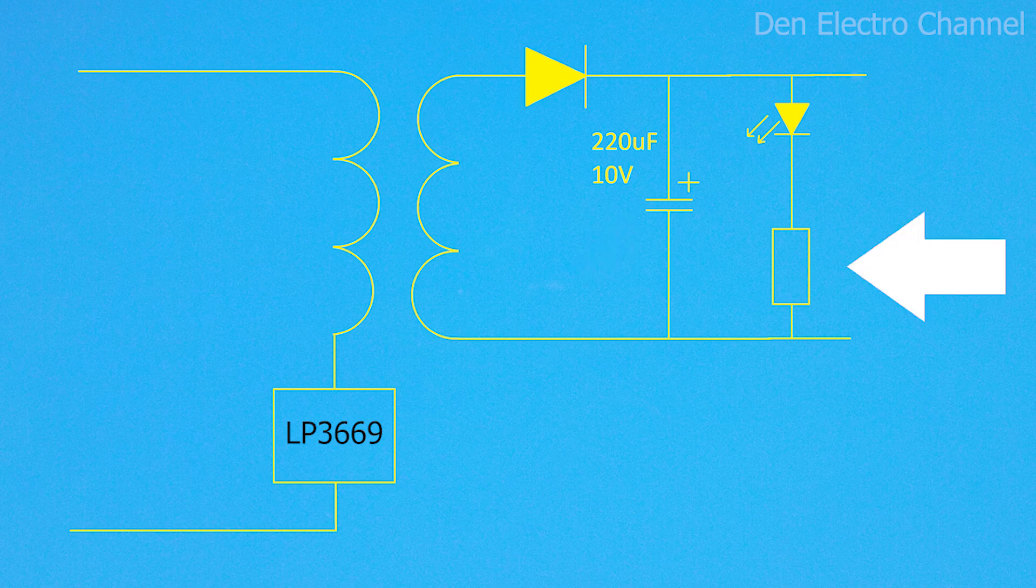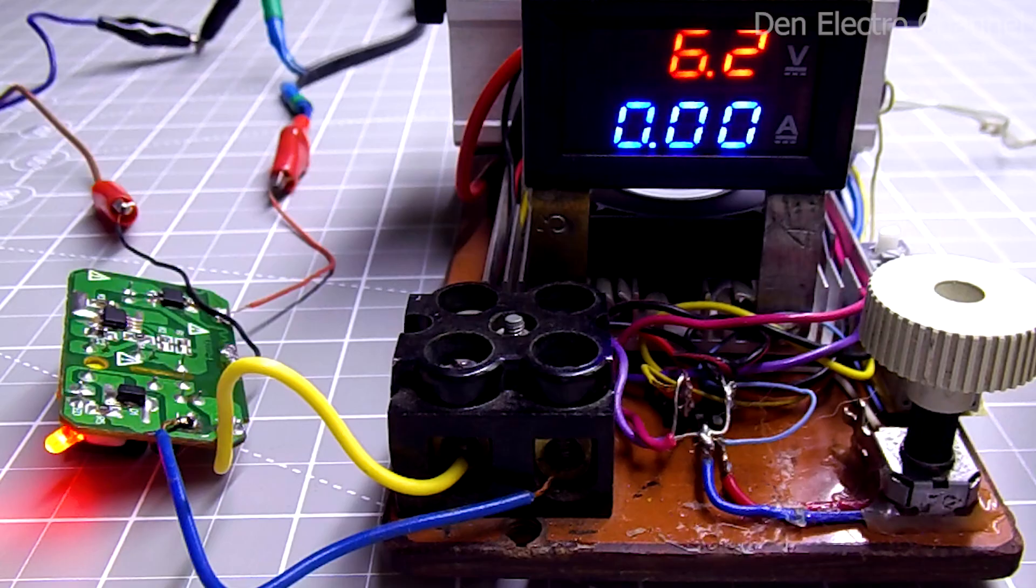The resistor next to the LED is 1 kilo ohm. For my purposes this is enough and the LED will not burn out. And if you are converting your power supply to a very high voltage and you also have an LED with a quenching resistor, then the resistance of the resistor will need to be changed. If someone doesn't know how to choose a resistor for an LED, you can watch my video, the link to it will be in the description.